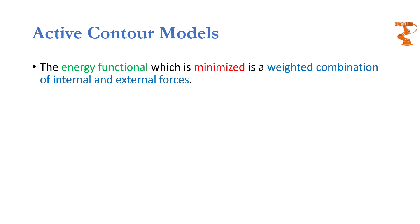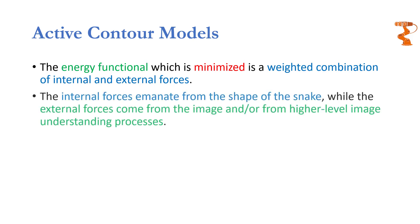So the energy functional which is minimized is a weighted combination of two types of forces: internal forces and external forces. Whenever something is moving, it is moving because of two forces: forces emanating from within that thing and the forces which are coming from the environment. In the same way, a snake will move because of internal forces and external forces.